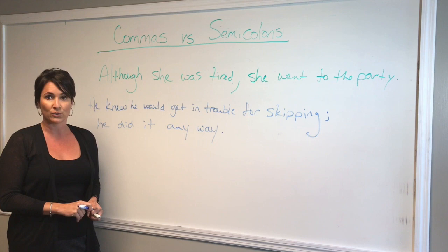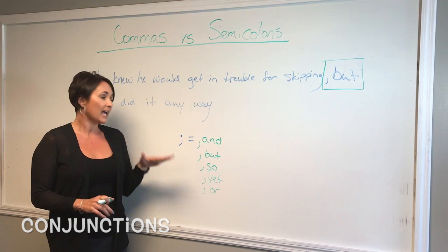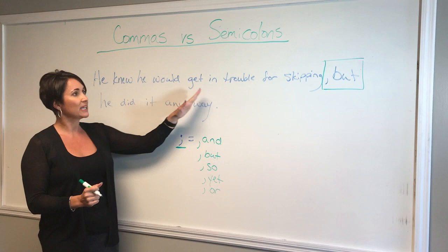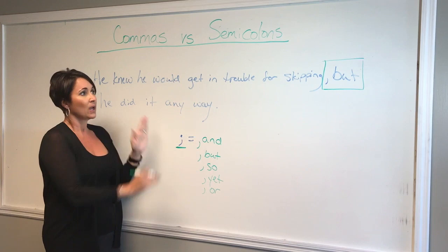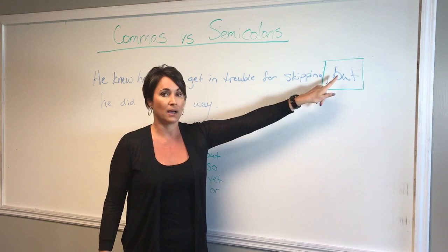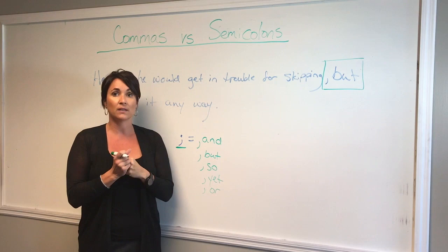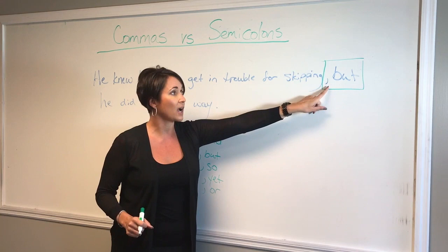Now, sometimes we use a comma with a conjunction, and that functions like a semicolon. So in this example, we have 'He knew he would get in trouble for skipping' — that is a sentence — and 'He did it anyway.' Right here, I could use a semicolon and it would work. But I can also use a comma but. A comma but equals a semicolon and can connect two independent clauses. I cannot just use the but without the comma — you have to have the comma but in order for it to connect two independent clauses.